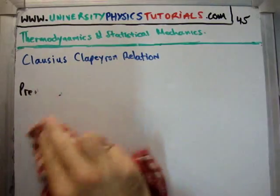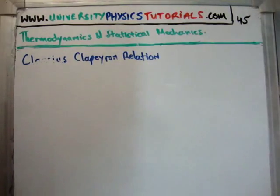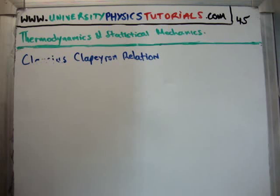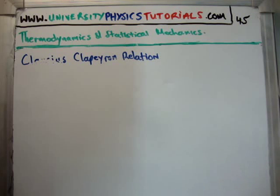So the Clausius-Clapeyron relationship relates entropy and volume. And that's really what we're going to do. And there are different ways of doing it depending on whether you're talking about a solid and liquid phase change or a liquid gas phase change.